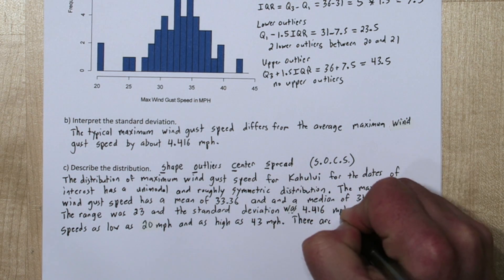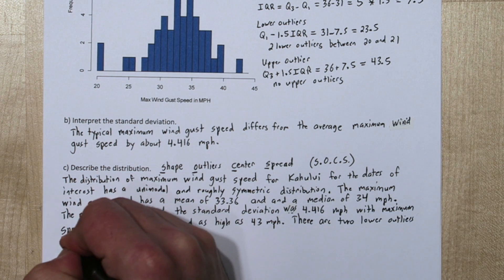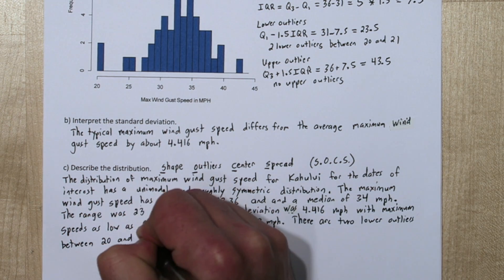Finally, as we found in Part A, we can talk about the outliers. There are two lower outliers between 20 and 21 mph.